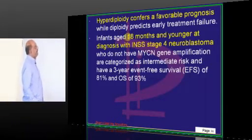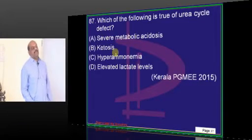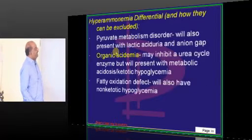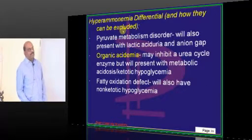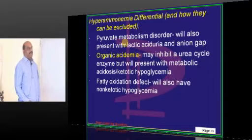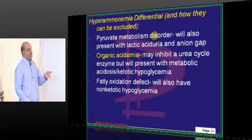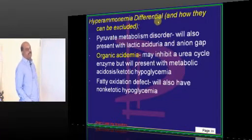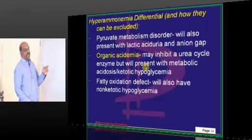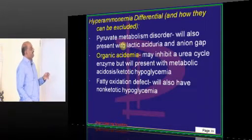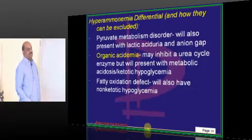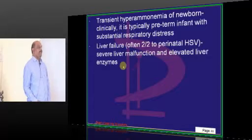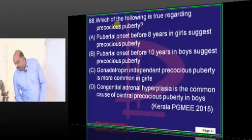Hyperdiploidy confers a favorable prognosis. In urea cycle defects, hyperammonemia occurs classically. The differentials for hyperammonemia include: pyruvate metabolism disorder — where there will be lactic acidemia and elevated anion gap; organic acidemia with ketosis; fatty acid oxidation defects; and transient hyperammonemia of the newborn.